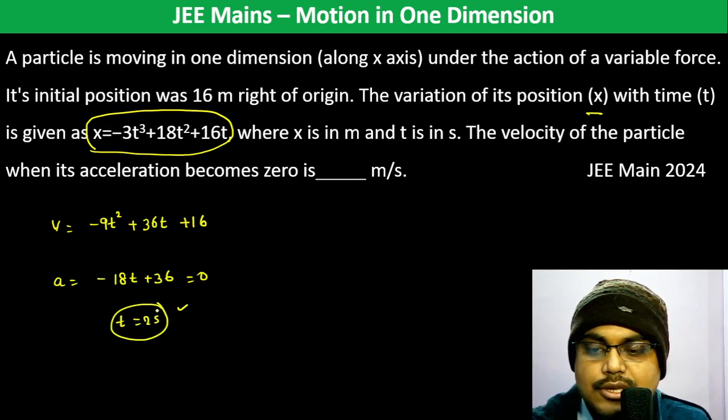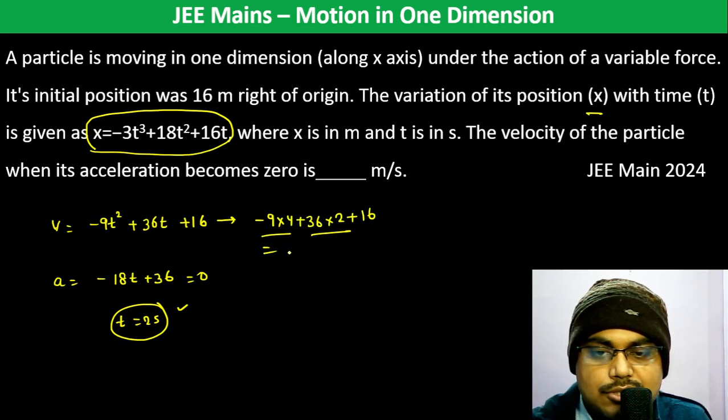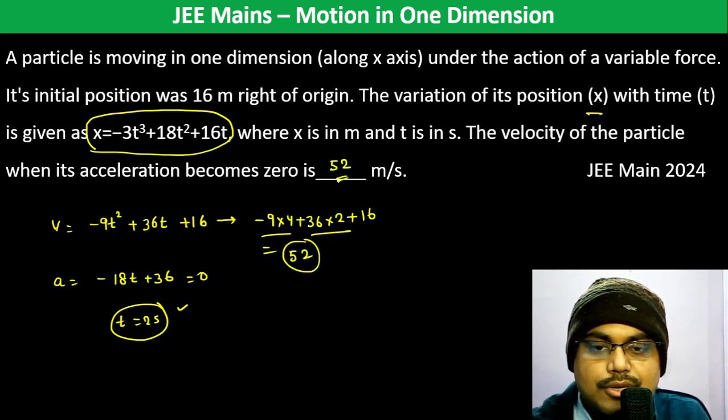is 2 seconds. The velocity at t = 2 seconds is -9 × 4 + 36 × 2 + 16 = -36 + 72 + 16 = 52. So the answer is 52 meters per second.